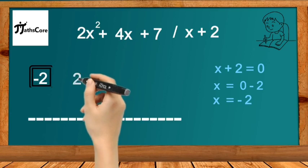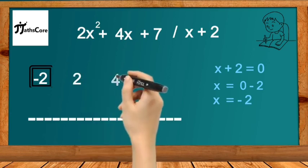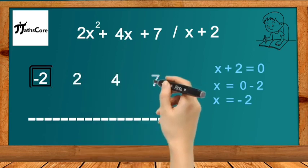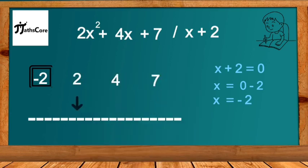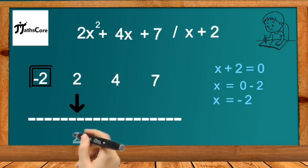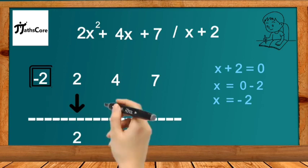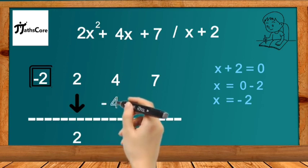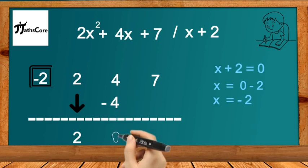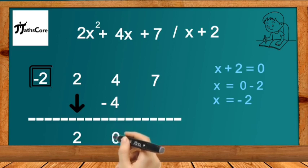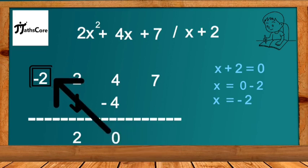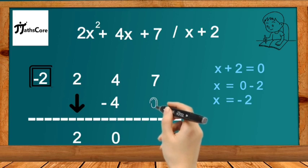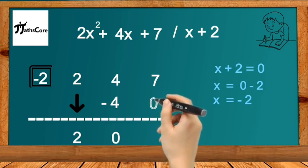Now let's arrange the coefficients of this trinomial: 2, 4, 7. Take the first coefficient 2 as it is at the bottom and multiply it with -2, so 2 × (-2) = -4. Add this -4 to the next number 4: 4 + (-4) = 0. Multiply this 0 with -2, and we get 0.